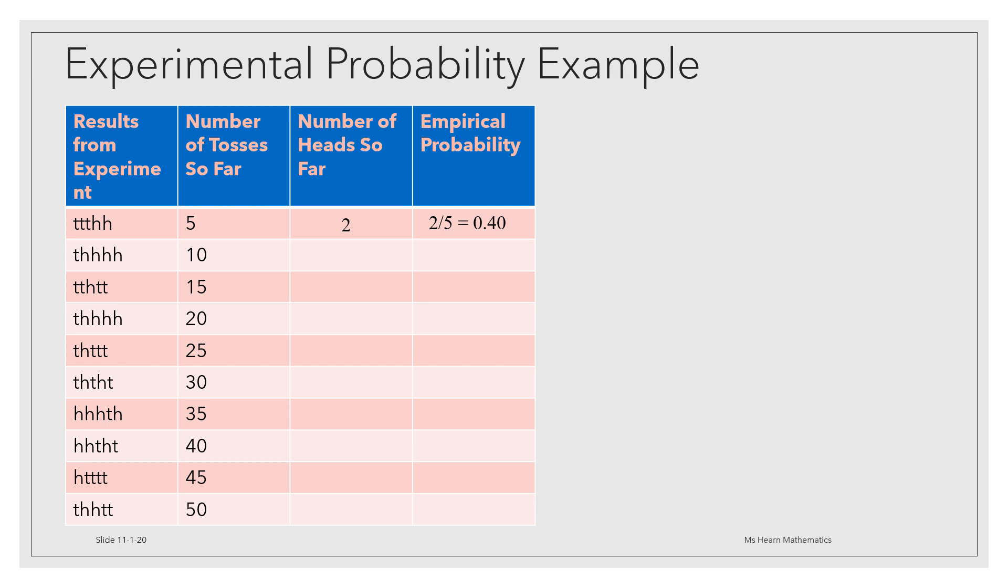Now let's look at the next five. Tails, heads, heads, heads, heads. Four more heads have appeared, which brings our total number of heads up to 6 so far. So out of the first 10 flips, 6 of them were heads. So the empirical probability of heads appears to be six tenths, or 0.60.